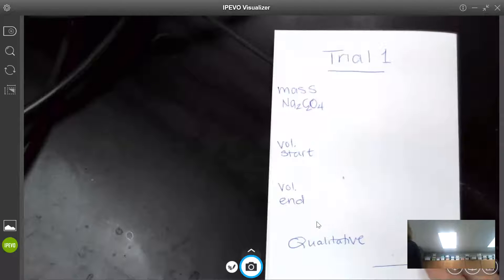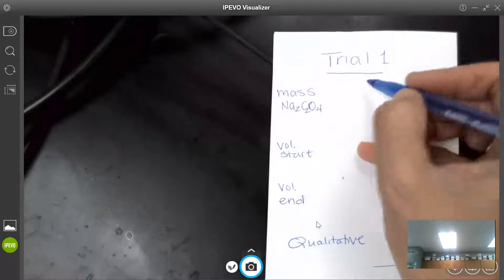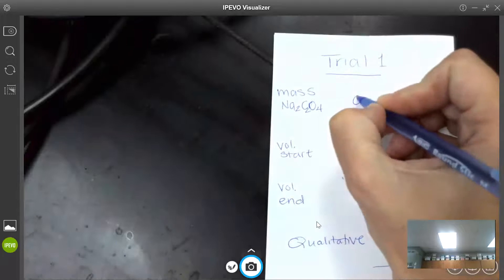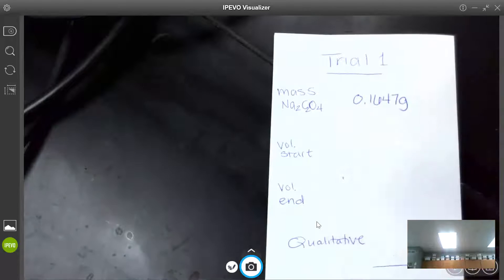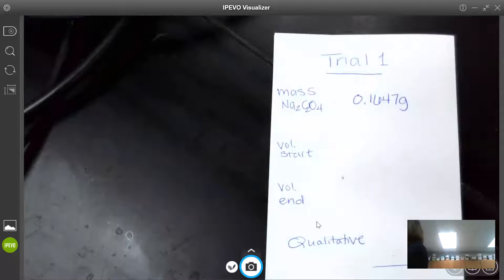We're going to do two trials. The mass of the sodium oxalate from my first trial was 0.1647 grams. Of course you would include uncertainties with these numbers. And the volume of the beaker.